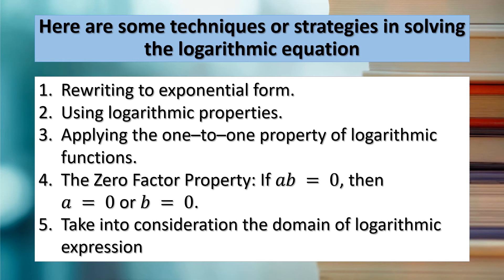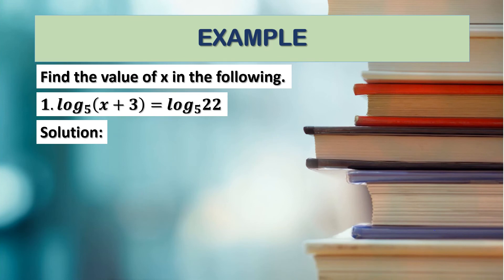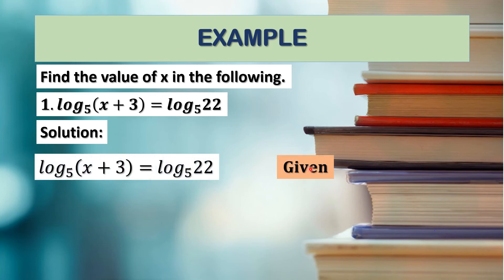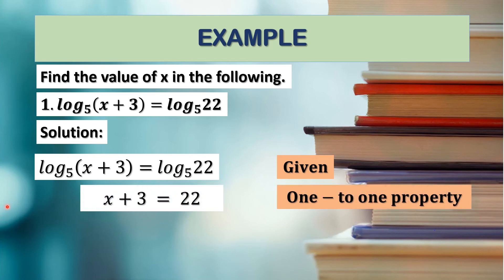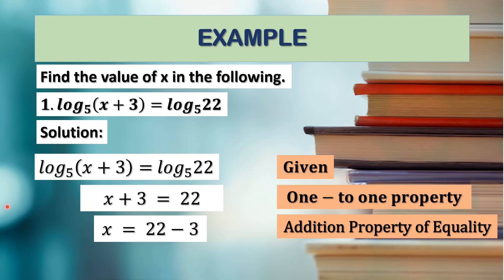To demonstrate strategies for solving logarithmic equations, here is the first example: log of (x + 3) with base 5 equals log of 22 with base 5. Since both sides have the same base, we apply the one-to-one property, equating the arguments: x + 3 = 22. Solving for x, transpose positive 3: x = 22 − 3. Therefore x = 19.